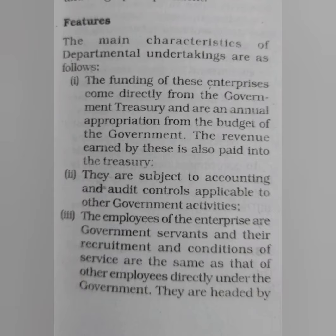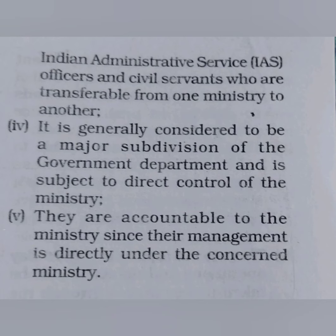The second feature is that they are subject to accounting and audit controls applicable to other government activities — the government has the right to check the department's audit and accounting. The third feature is that employees of the enterprise are government servants, and their recruitment and conditions of service are the same as that of other government employees. They are headed by Indian Administrative Service officers and civil servants. The fourth feature is that it is a major subdivision of the government department and is subject to direct control of the ministry.